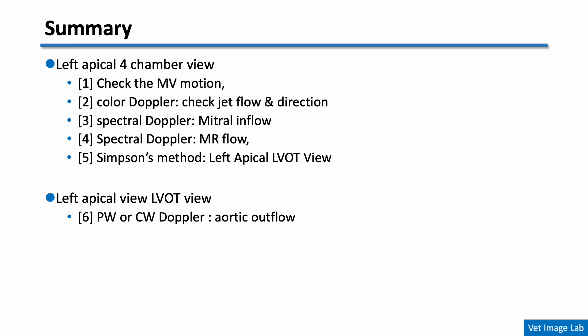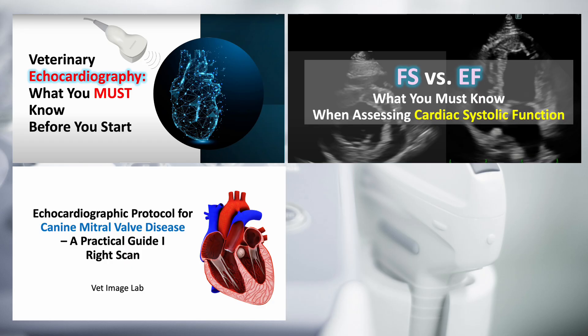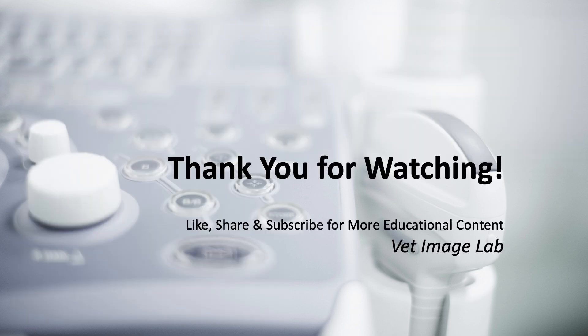We've now reviewed the echocardiographic checklist for MMVD evaluation over two lectures. In this session, we focused on the left apical view and covered what to assess using B-mode, Doppler, and functional measurements. If you'd like to revisit the basic concepts of echocardiography or go over the right-sided scan checklist, please check out our previous lecture. Thanks for joining us again — this has been Vet Image Lab. Don't forget to like, subscribe, and turn on notifications so you don't miss our next video.